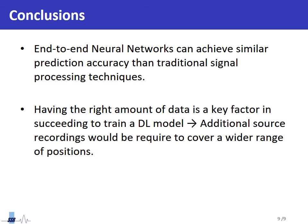After this brief discussion on the contents of the report, we can conclude that end-to-end neural networks can achieve similar prediction accuracy to traditional signal processing techniques, and therefore can substitute the traditional signal processing algorithms provided that a sufficient amount of information is available. In this regard, additional source recordings would be required to cover a wider variety of positions if we want to deploy this system in a real environment. Thank you very much and stay safe.